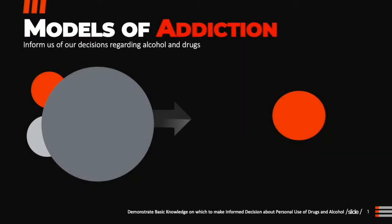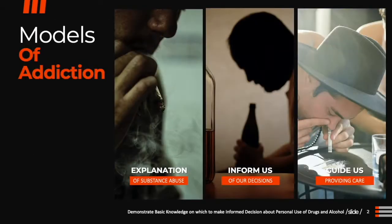In the following minutes, we will discuss the different models of addiction, addiction in the brain, risk factors, and preventable factors. These all play an important role in how individuals make informed decisions about personal use of alcohol and other drugs. There are numerous models of addiction that help us in understanding the complexities of substance use. These addiction models can be used as possible explanations of substance use, inform us of our decisions regarding alcohol and drugs, and guide us while providing care for our clients.